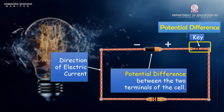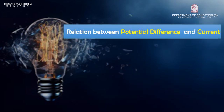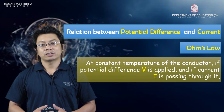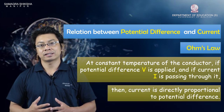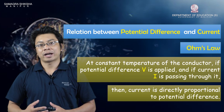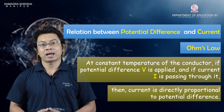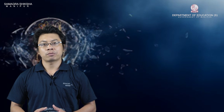If a potential difference is applied to a conductor, we can calculate the current I. The current I is directly proportional to V, so the relationship is V directly proportional to I.